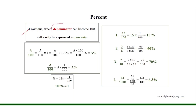Fractions where the denominator can become 100 will easily be expressed as percents. According to the identity rules of multiplication, we know that the product of any number and 1 is that number. So A over 100 is equal to A over 100 times 1.